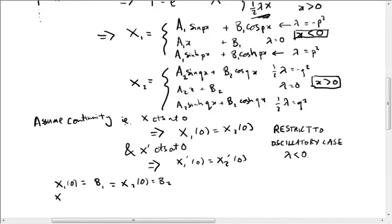What is X1 prime at zero? Well, differentiating a1 sine px plus b1 cos px, we get p a1 times cos px at zero, which is one, and then a term with a sine px which vanishes. So we just get p a1, and X2 prime at zero is similarly q times a2, and these two are supposed to be equal for continuity of the derivative.